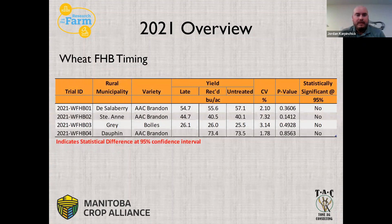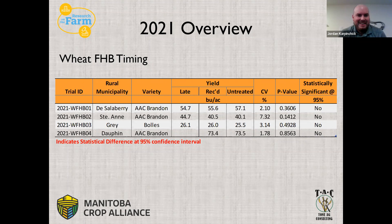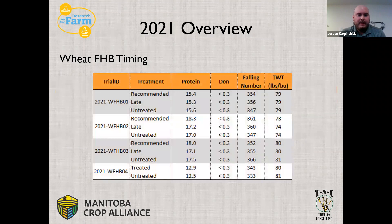For wheat Fusarium head blight timing, we had four sites in the province. As most of you know, Fusarium was not a top concern for most producers because it was very hard to find. There was no statistical yield difference between any of the treatments — late timing, early timing, or untreated — at any of the sites. Seed samples taken at harvest showed DON numbers all below the detection level. Protein numbers ranged from about 12.5 to 18%, averaging 16.1%, which is typical when you have a bit less moisture and more nitrogen stuck in the plant.